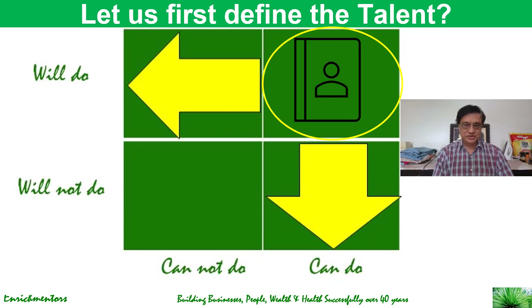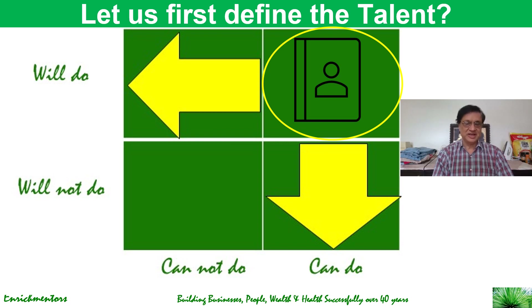As you can see in the chart, there are broadly four kinds of people in an organization. First, there are people who are not capable — they can't do the job assigned and they don't want to do it. These are the people we don't mind letting go; in fact, we will encourage them to leave because they lack both the capabilities and the motivation.